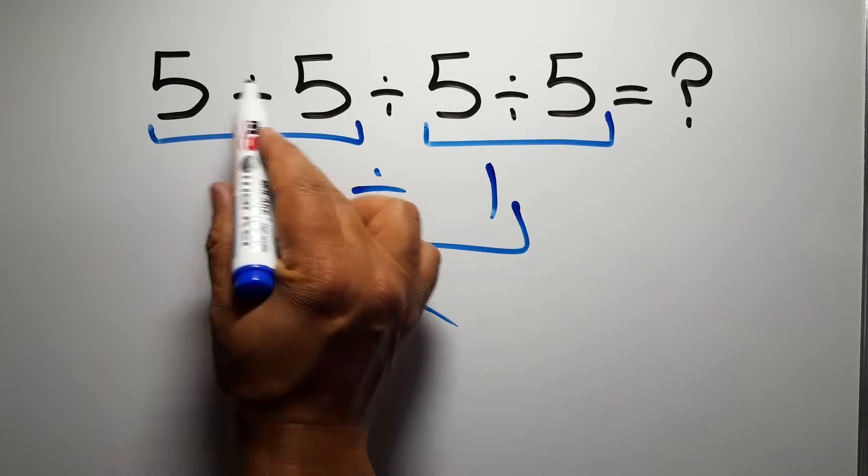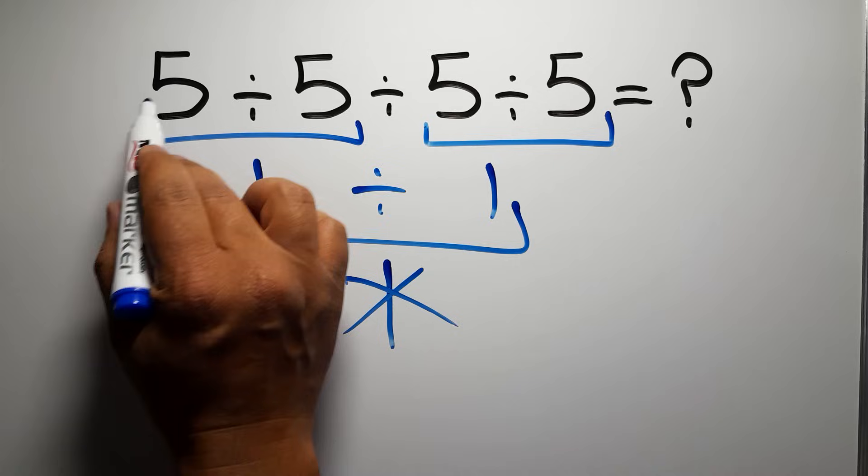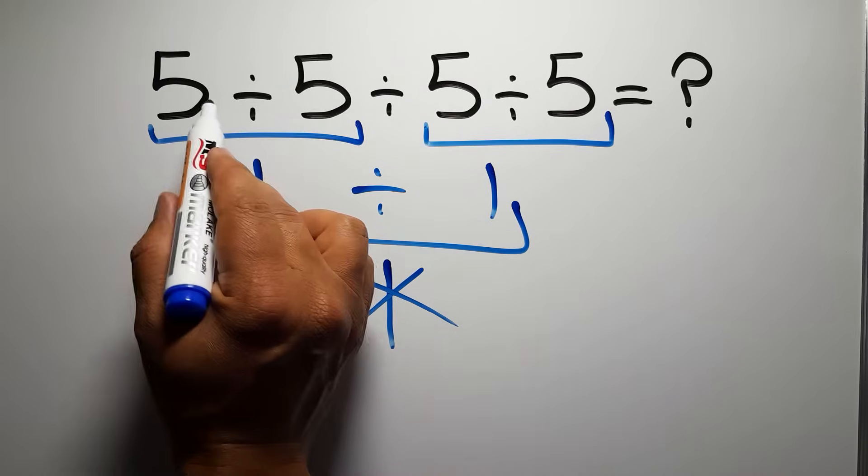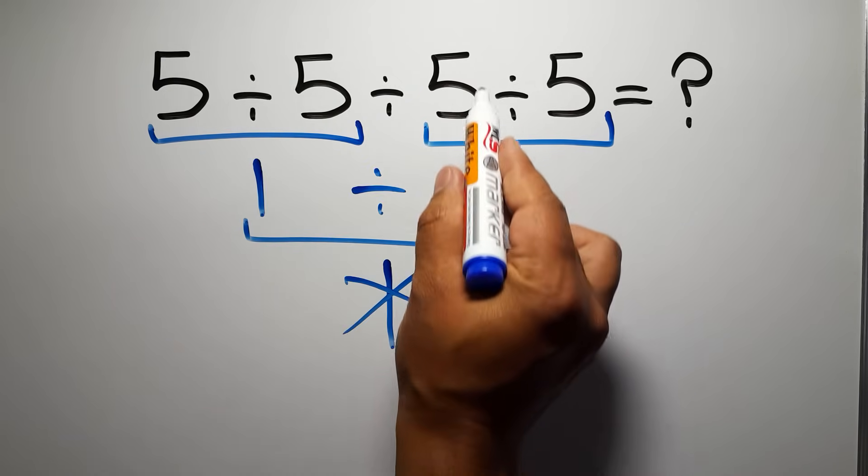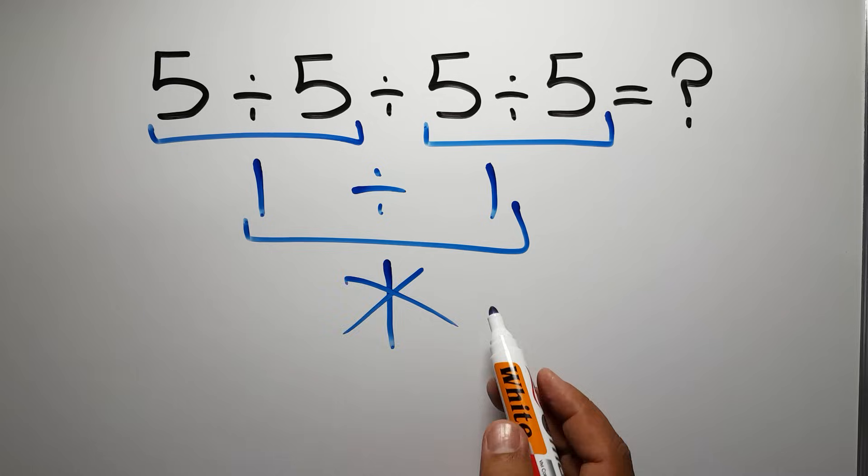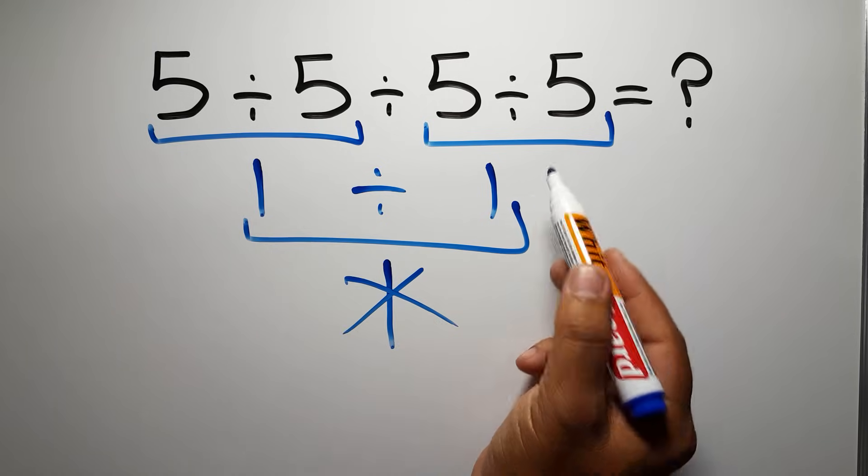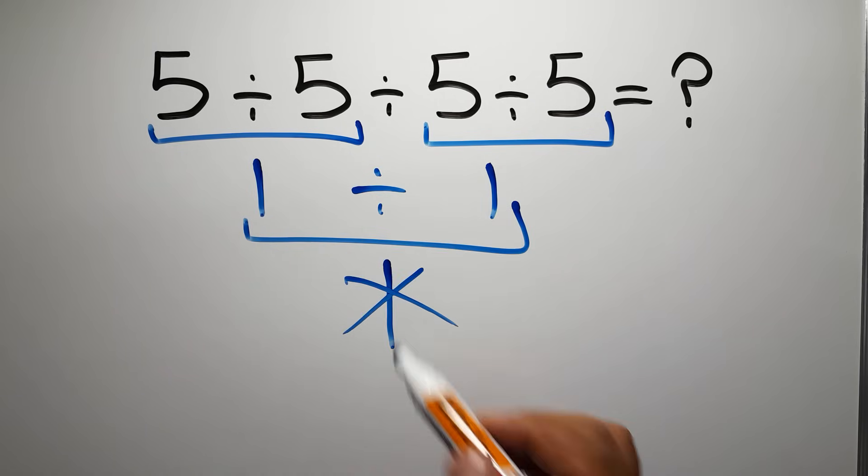So first we have to do this division, then this division, and finally this division. If you do this division before this division, it is wrong.